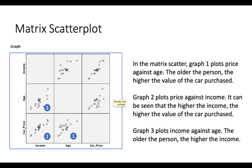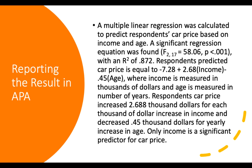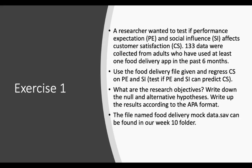The matrix scatter plot alone is not enough to draw conclusions — you still need to examine your regression output. So, pretty simple and straightforward. Exercise one for you: instead of only having social influence, I have added performance expectations. Refer to your own research, see how many IVs you have, and decide which analysis to use. Use the same data uploaded in Google Classroom, and we will discuss the answers during class. Thank you very much.